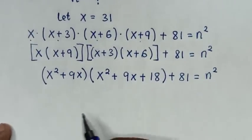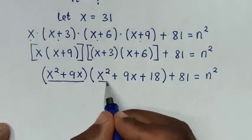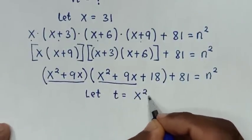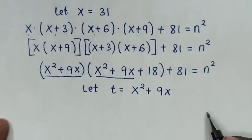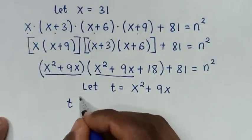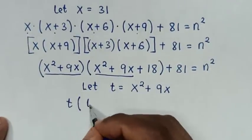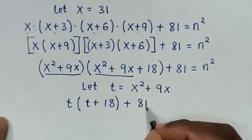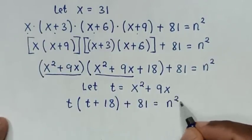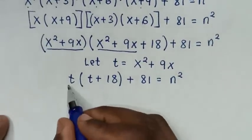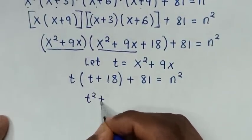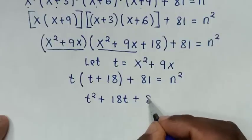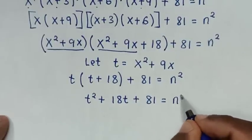In the next step, we notice x² + 9x is common in both factors, so we let t equal to x² + 9x. Substituting, the equation becomes t(t + 18) + 81 = n², which expands to t² + 18t + 81 = n².